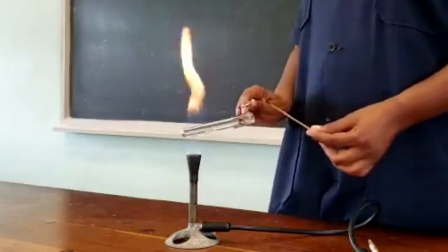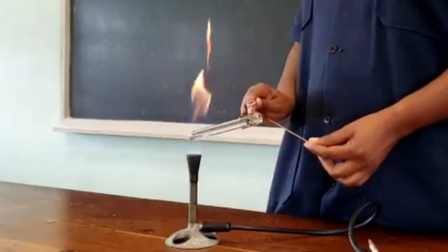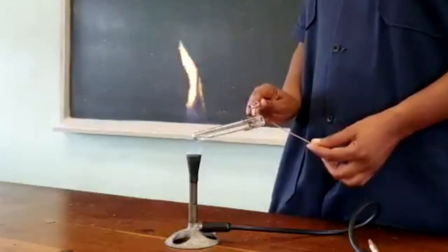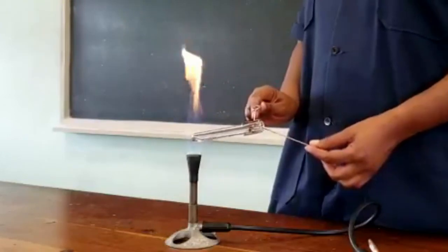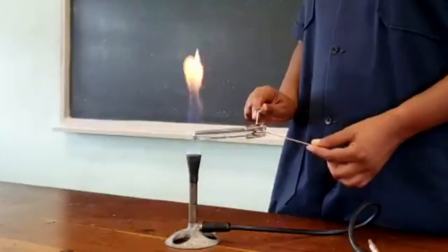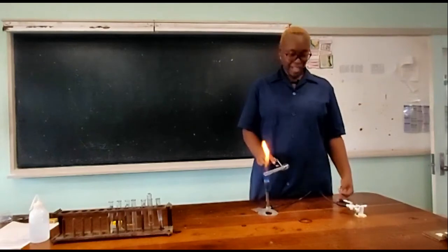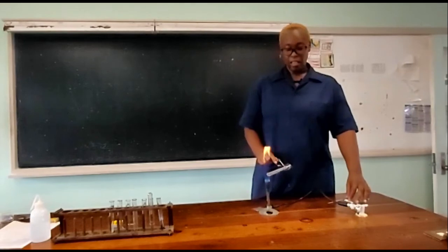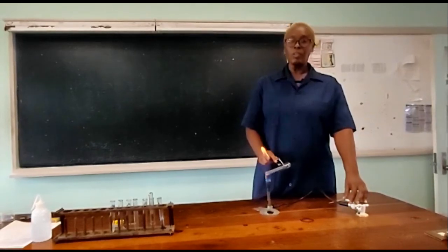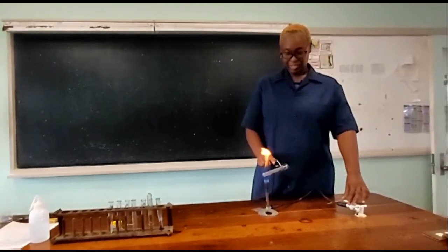And here we have right near the mouth of the tube, my glowing splint still continues to glow. And so that indicates to me my glowing splint hasn't been put out. What does that indicate? The fact that my glowing splint is not put out indicates that you should know what gas is being given off.